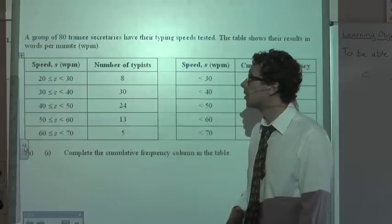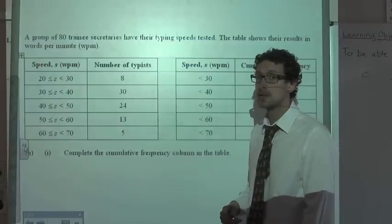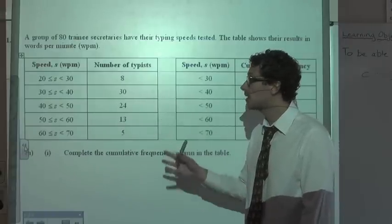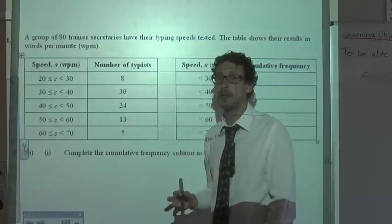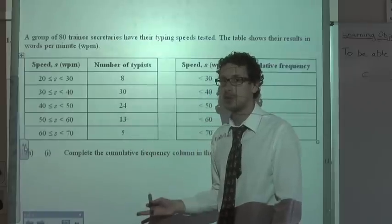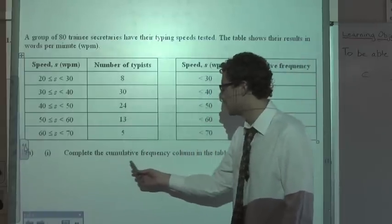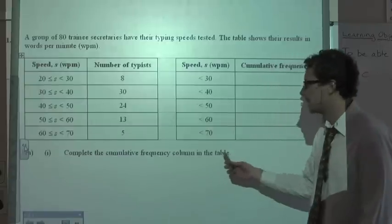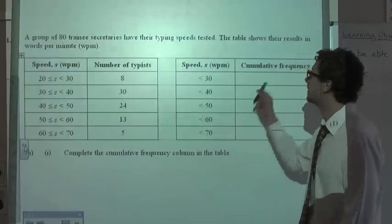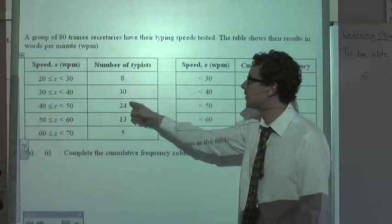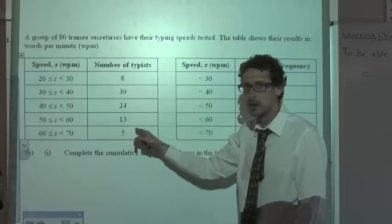There were 8 typists that could do 20 to 30 words per minute, 30 between 30 and 40 words per minute, and so on. The first part of the question says to complete the cumulative frequency column in the table, so I need to accumulate the frequency — add it up as I go along.